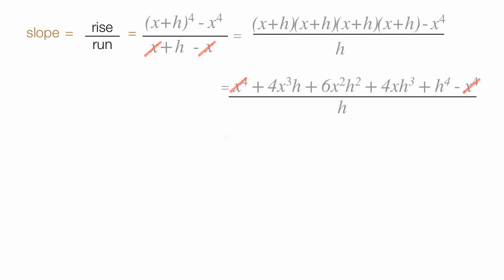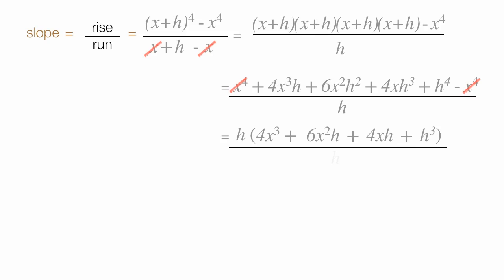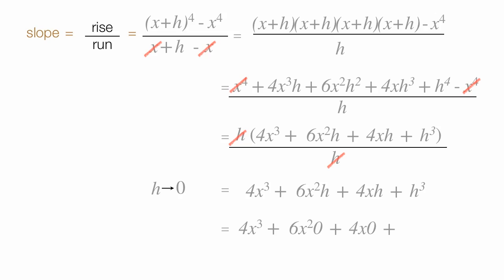So I'm going to factor h out of the numerator. So I have h times all this — h times all this divided by h. These two h's cancel out. I'm left with all of this. Whereas h approaches 0, I can write this as 4x cubed plus all this other stuff times 0, and I can ignore all these terms.